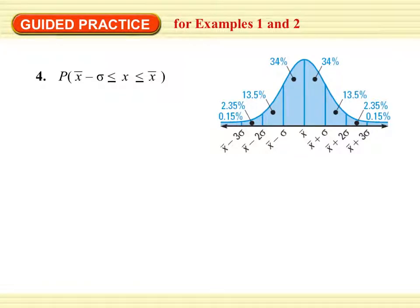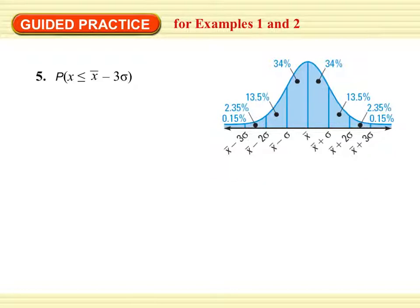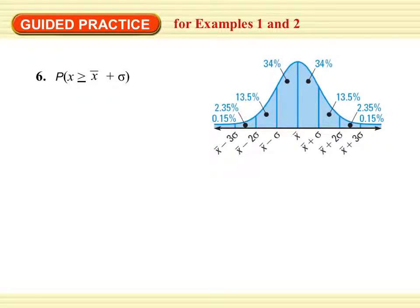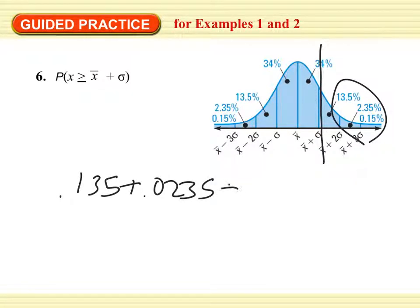How about between x-bar minus 2 sigma and x-bar? That's 0.34. And x is less than x-bar minus 3 sigma — x-bar minus 3 sigma is here, so it would be 0.0015. How about x is greater than x-bar plus sigma? It would be 0.135 plus 0.0235 plus 0.0015, and we get 0.16.